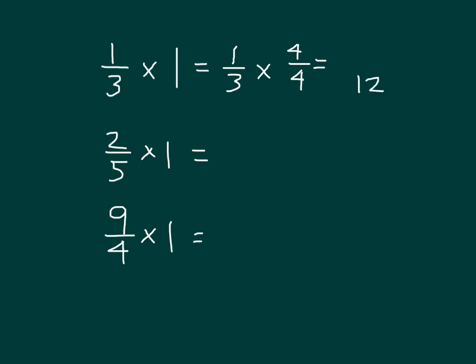To be able to express this fraction in twelfths. How many twelfths would that equal? Right, 4 twelfths. So 1 third is equivalent to 4 twelfths. And what I'm doing is I am multiplying by 1 there.